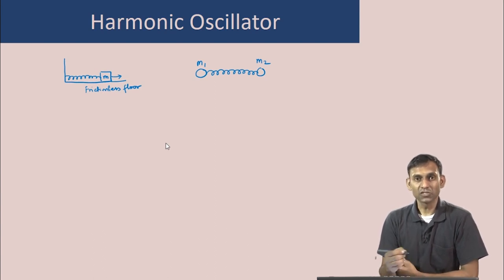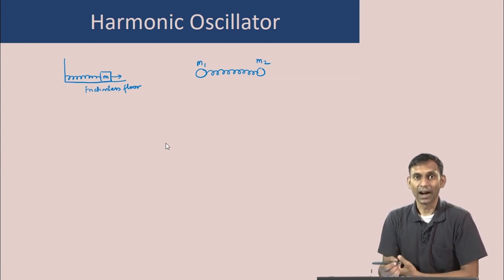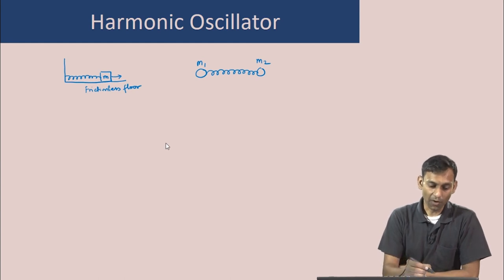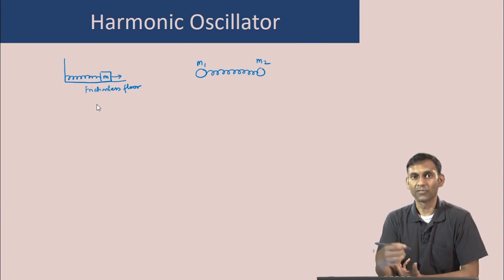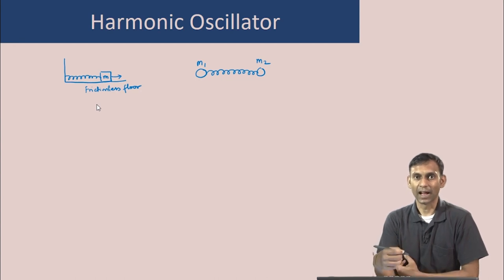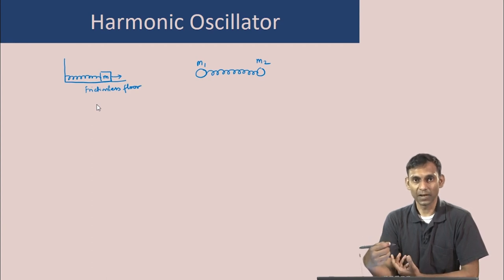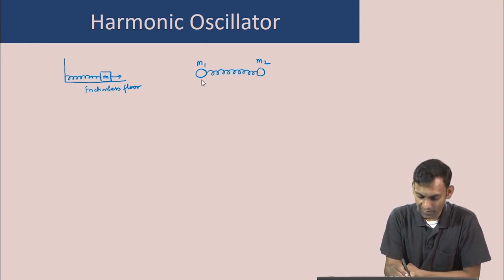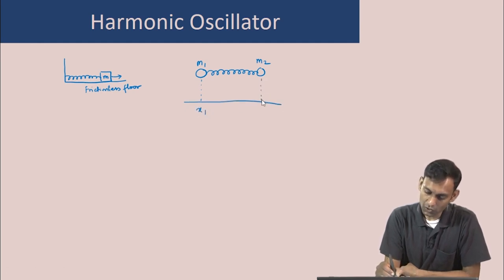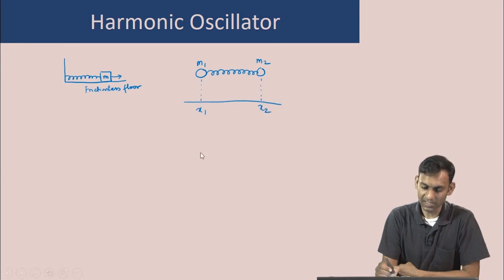Our goal is to show that this system of two particles attached by a spring is actually identical to the system of one particle attached by a spring, plus an overall translation of the center of mass. Let us map this problem of two particles attached by a spring to a harmonic oscillator problem. We assume these two masses have positions x1 and x2 for masses m1 and m2.